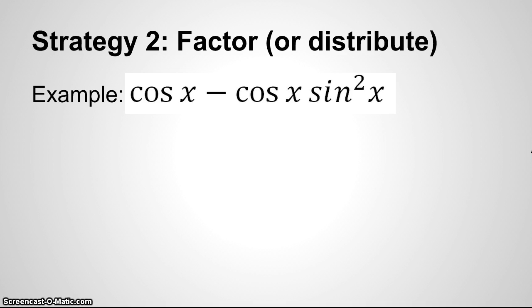But the second strategy is to factor or distribute. So if you see parentheses, it's likely you're going to want to use a distributive property. In this case, we can see that we have cosine here and cosine here. So we can factor the cosine out. So cosine x, and when I factor this in, I'm going to have one. When I factor it here, I'm going to have sine squared.